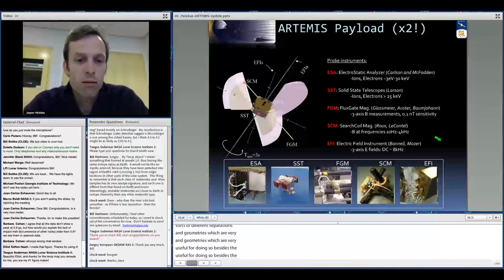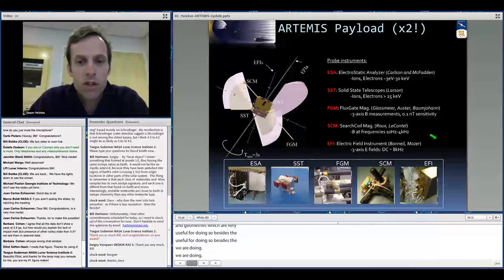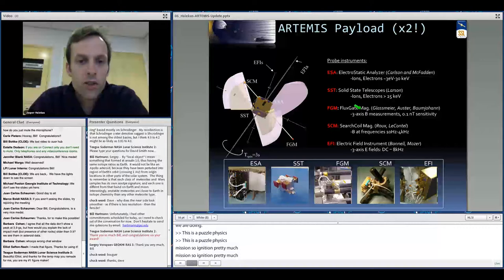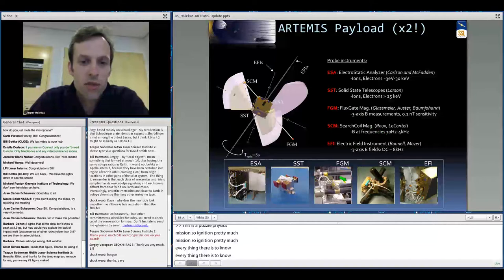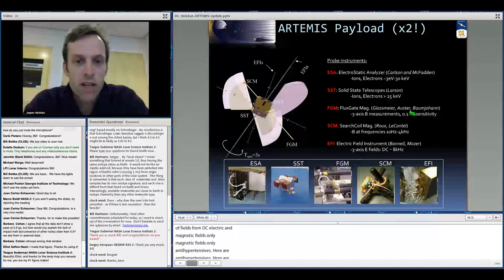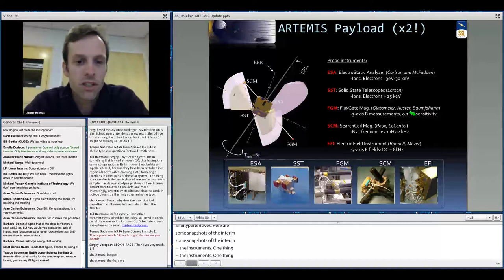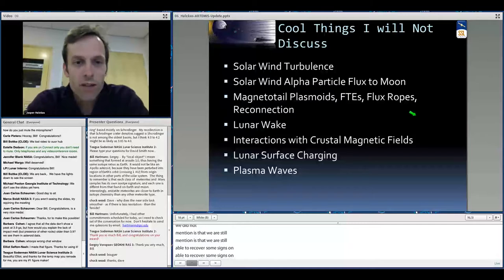The Artemis mission has very comprehensive plasma instrumentation because THEMIS was a plasma physics mission. So we measure pretty much everything there is to know about the plasma, from the thermal ions and electrons up to the energetic ions and electrons, and then the full suite of fields from DC electric and magnetic fields all the way up to high frequencies. One thing that we unfortunately do not measure on Artemis is the ion mass composition, and that's really too bad, but you'll see that we're still able to recover some science on things like pickup ions.